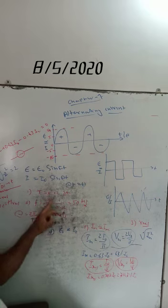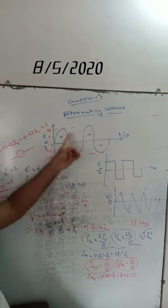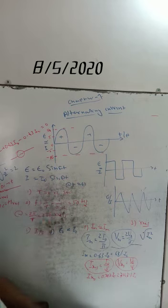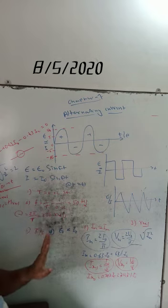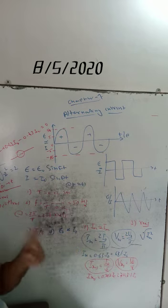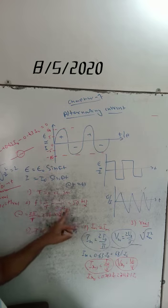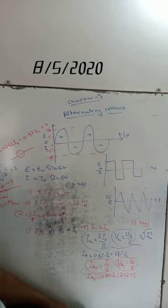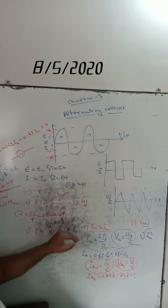In India, the period is 0.02 seconds. The number of cycles per second is called frequency. The reciprocal of the period is the frequency: 1 divided by 0.02 seconds equals 50 hertz. India's AC supply frequency is 50 hertz. The angular frequency omega equals 2π/T, that is 2πf radians per second.